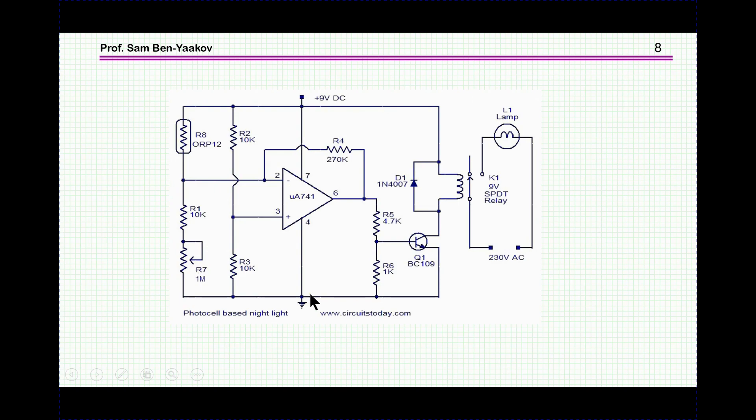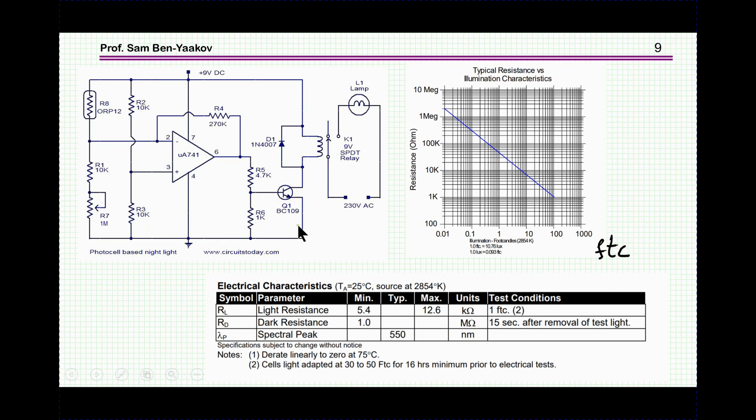Here is one of the most popular applications, a light switch, that is a relay that will turn on the light when the ambient is of low light or dark. And this is done by having this photoresistor or photocell, light-dependent resistor, here exposed to the ambient light. We have here a divider and an amplifier.